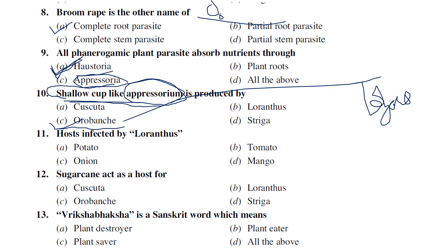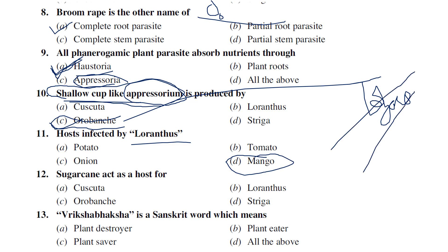The host mainly infected by Loranthus is mango, which is a fruit tree. On the branches or stems of mango, you can observe a very large tumor-like growth — that is Loranthus. It is mainly observable on fruit trees like mango.